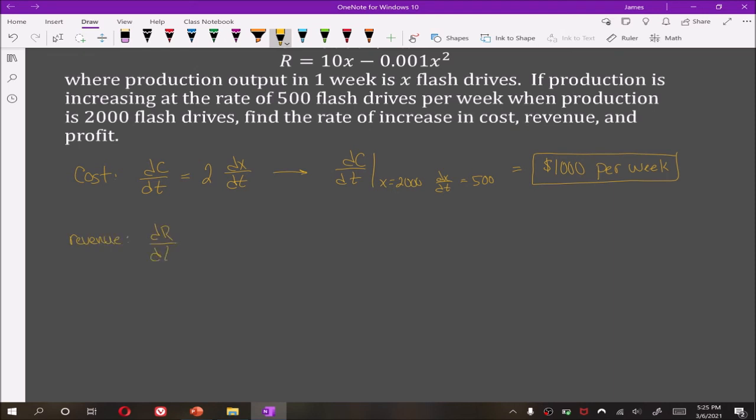Revenue: dR/dt is equal to 10 minus 0.002x, and all this is times dx/dt, because it'd be 10 dx/dt minus 0.002x dx/dt.